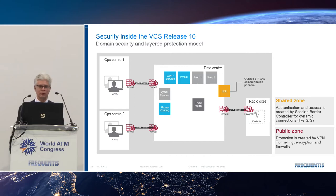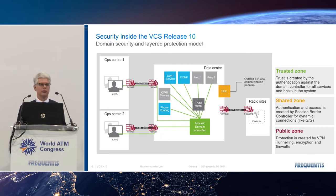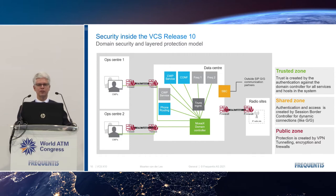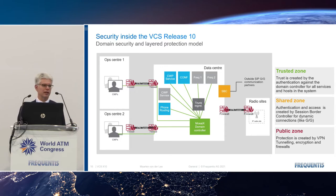In our VCS model, the public zone is protected by firewalls and VPN tunnels between the different sites, operation centers, radio sites, and the data center. The shared zone has authentication created by the session border controller for ground-to-ground connections. The MOSAICS domain controller creates trust between the services running in the data center. The authentication, certificate distribution, and identity management all come as one package within the extended MOSAICS delivery.